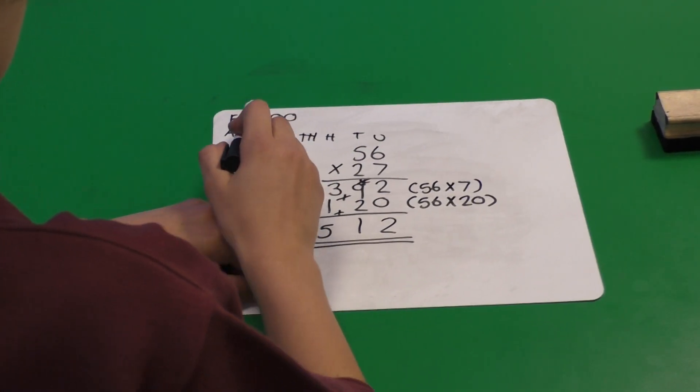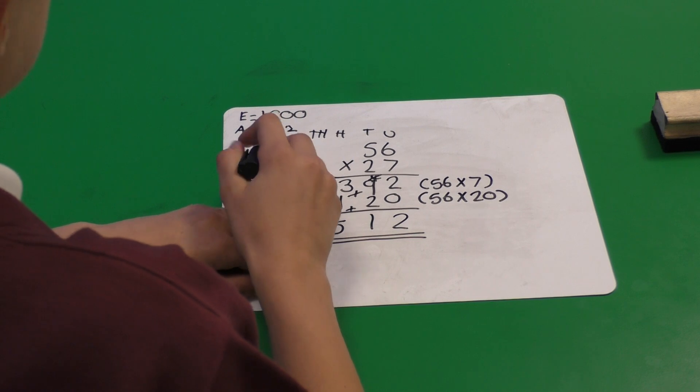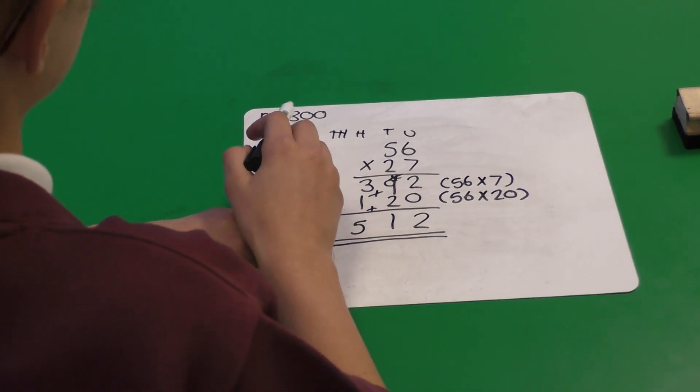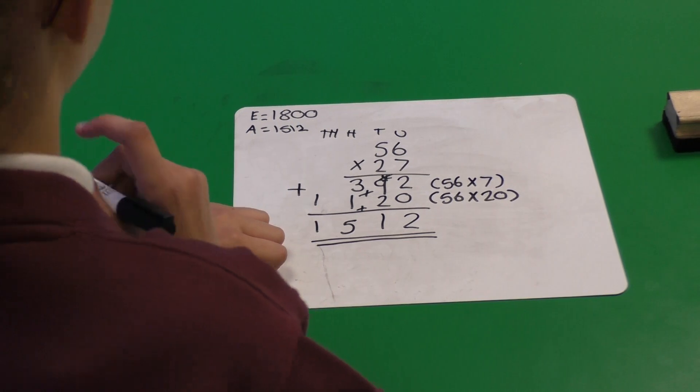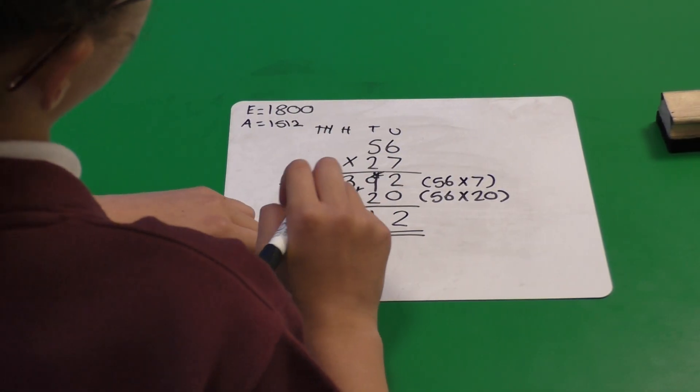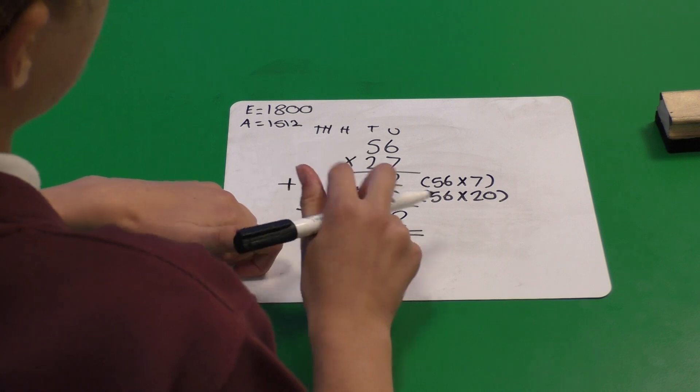So if you look back to our estimate earlier of 1,800, our answer of 1,512 is close to it. So that shows we're doing it right. So that was 56 multiplied by 27 using the compact multiplication method.